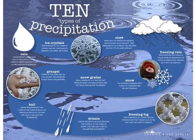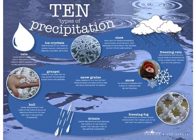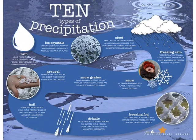Here are a couple of other precipitation types that are less common. One of them is graupel, which is similar to hail but is smaller. Here's hail — that's an ice ball and sometimes it happens during thunderstorms. Drizzle is very light rain. And then there's freezing fog, which is a pretty rare event.